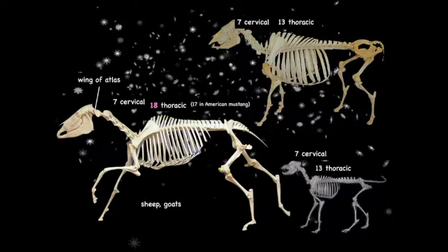The horse has 18 thoracic vertebrae. This is important because it increases the size of the thoracic cavity, allowing for greater space for the heart and lungs, giving better respiratory and cardiovascular capacity. Note that the American Mustang only has 17 thoracic vertebrae and hence 17 pairs of ribs, whereas the bovine has 13, as the dog also has 13.